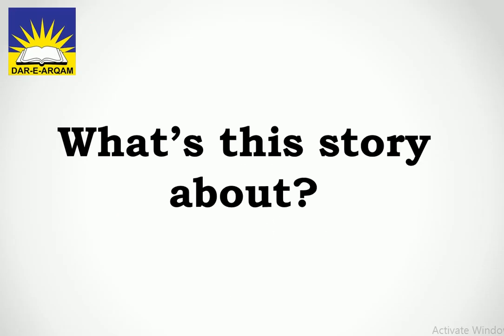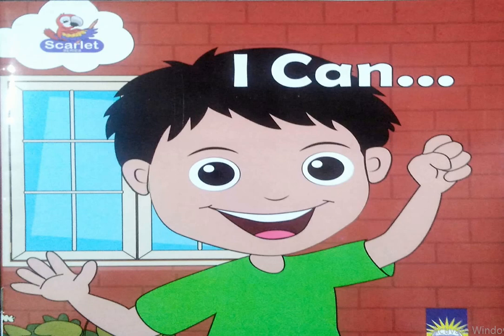What's this story about? This story kiske baare mein hai? This story is about a boy whose name is Ali. Can you see Ali? He is Ali, and he is smiling. What is he doing? He is smiling, and he is saying: I can. Ali keh raha hai ke mein kar sakta hoon — I.K.A.N.